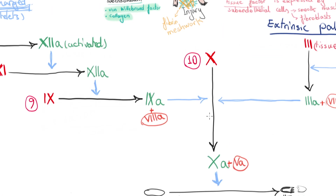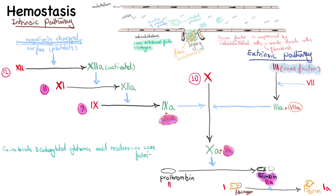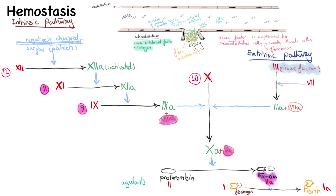What we reviewed is what happens in vitro. In vivo, the major coagulation initiator is tissue factor (factor 3) via the extrinsic pathway. Once it produces some thrombin, thrombin itself amplifies reactions of both pathways in a feedback loop, working on factors 5, 8, 9, and 11. Calcium also has a role, binding to gamma-carboxylated glutamic acid residues on some factors. Vitamin K is a cofactor in these reactions, and drugs such as coumadin antagonize vitamin K and are used as anticoagulants.